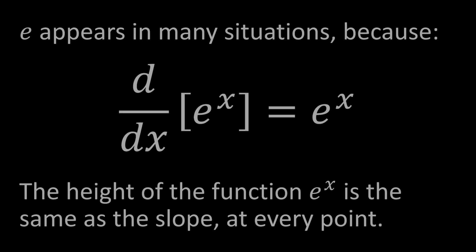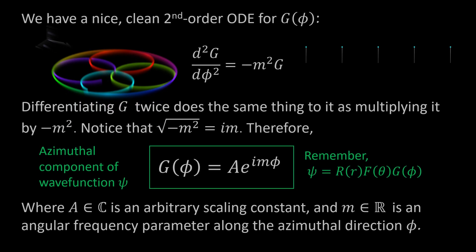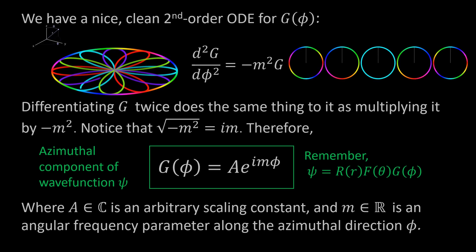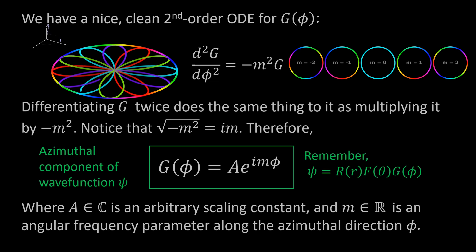We have to ask the question: why is it that E appears all over the place to begin with? The reason is that the defining feature of E is that the function E to the x is equal to its own derivative — the more you have of the function, the faster the rate of change. When you're solving differential equations, you very often run into a situation where you have a derivative equaling or being proportional to the function. If you go back to hydrogen part 2, you can see how the azimuthal component pops out with E to the i·m·φ — that's an example of E coming out of a differential equation.